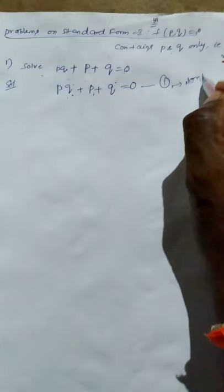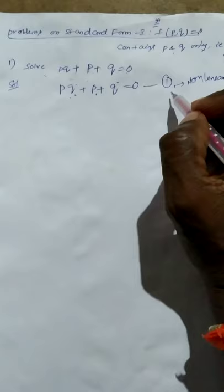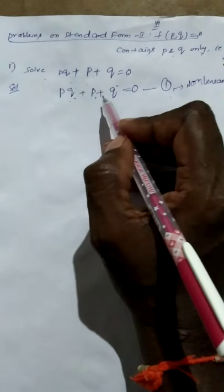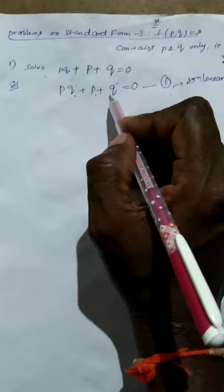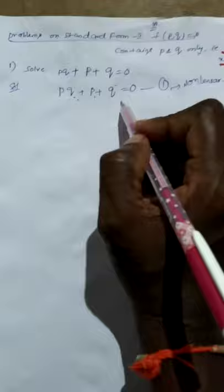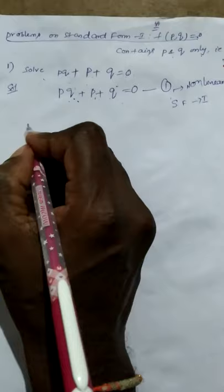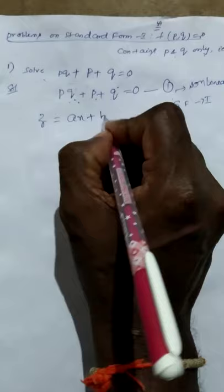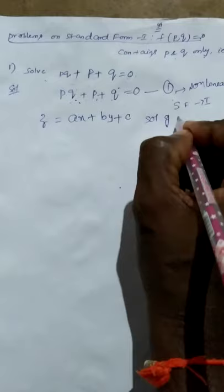After finding it is non-linear, we check whether it belongs to standard form 1 or not. According to standard form 1, the given equation must contain p and q only, and does not contain x, y, z. The given equation 1 contains only p and q. Hence it belongs to standard form 1. According to the working rule, in step 2 we consider z = ax + by + c as the complete solution of equation 1.